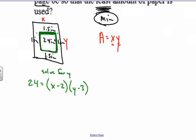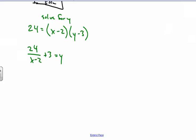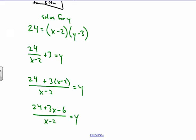To solve for y, we're going to divide both sides by x minus 2. And then what we're going to do is we're then going to add 3 and we'll have y by itself. Now, to make this a little bit easier, I'm going to create a common denominator. So we have 24 plus 3 times x minus 2 all over x minus 2. I'm going to continue to simplify this. 24 plus 3x minus 6 turns into 18. So 18 plus 3x over x minus 2.